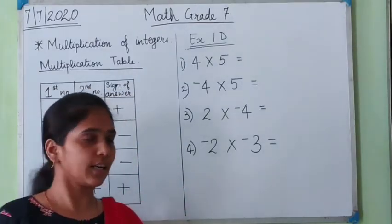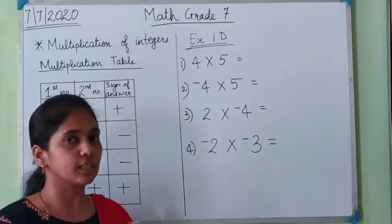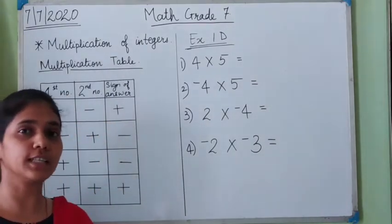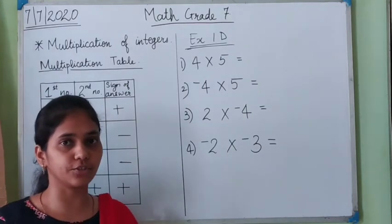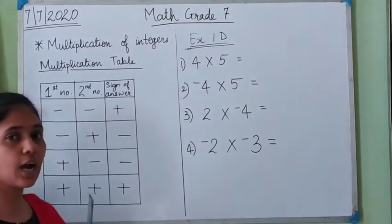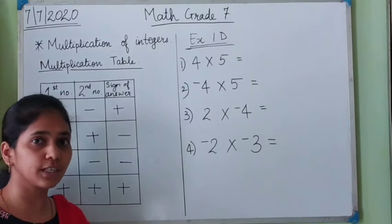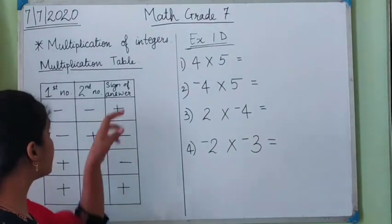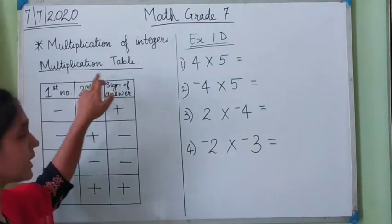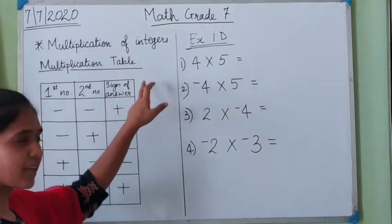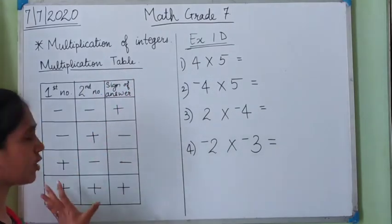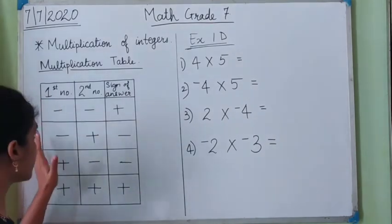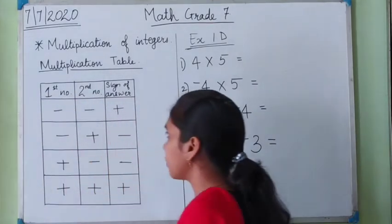In today's class, we are going to see multiplication of integers. Previously you studied addition and subtraction of integers. Now in this class we are going to see how to multiply integers — positive integers as well as negative integers. For that, we are going to make a new table: the multiplication table. The multiplication table is much simpler and smaller than the addition table.